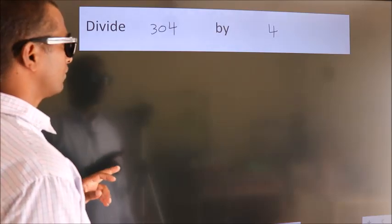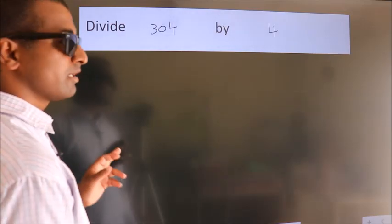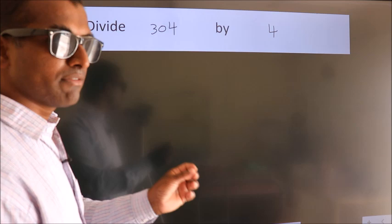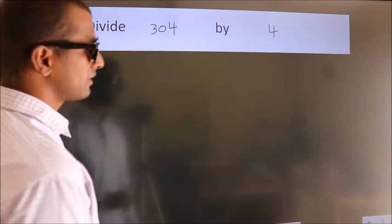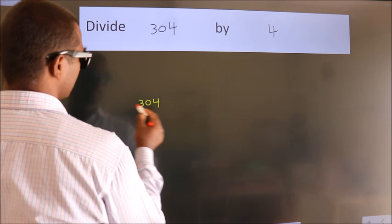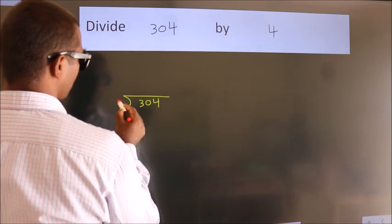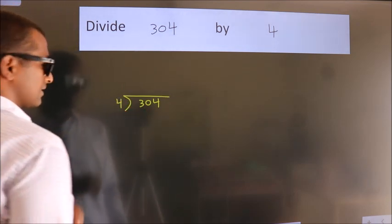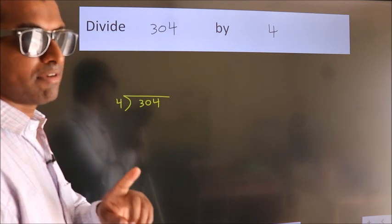Divide 304 by 4. To do this division, we should frame it in this way. 304 here, 4 here. This is your step 1.